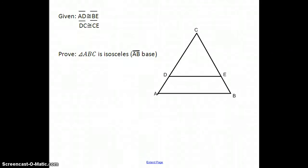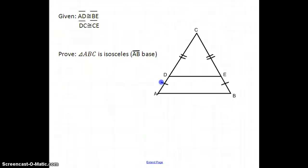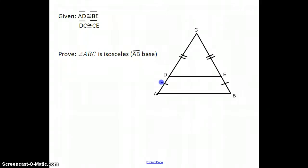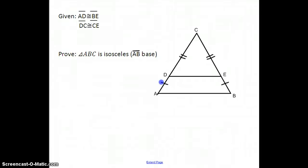Our given information gives us two sets of segments that are congruent: AD congruent to BE, as well as segment DC congruent to segment CE. Our goal is to prove that triangle ABC is isosceles, with AB as the base, meaning the legs AC and CB are the congruent sides. Looking at the picture, we can use the Segment Addition Postulate to prove AC is congruent to CB, so our plan of attack is to focus this proof on the Segment Addition Postulate.